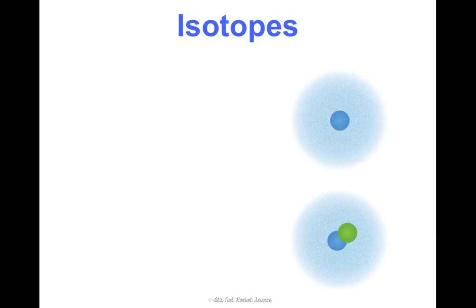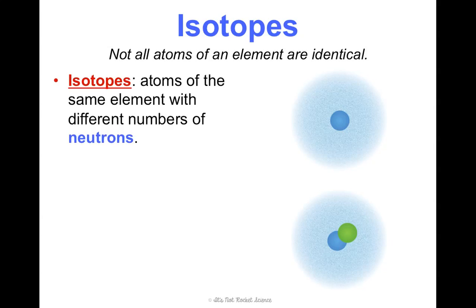Alright, so with that background information, now we can talk about what isotopes are, which is what this concept is really about. So, not all atoms of an element are actually identical. And this is a mistake of one of the scientists from our concept one notes. See if you can go back and see who thought that they would all be identical because they were not quite right. So, isotopes are atoms of the same element that have different numbers of neutrons. Now, the atomic number has to be the same for it to be the same element. Remember, the atomic number is the identity of the element.